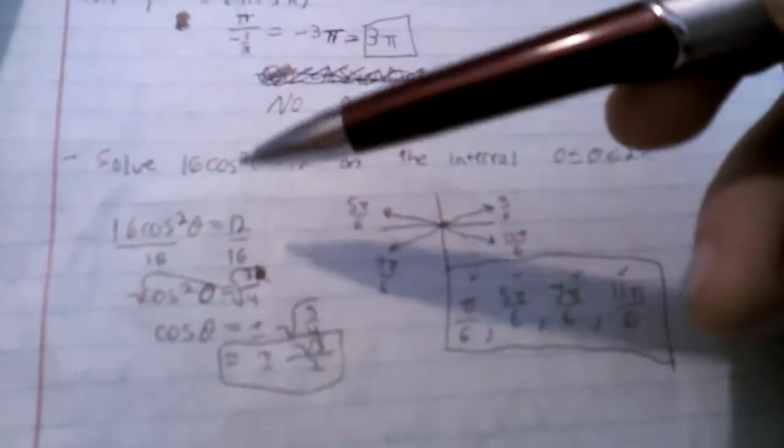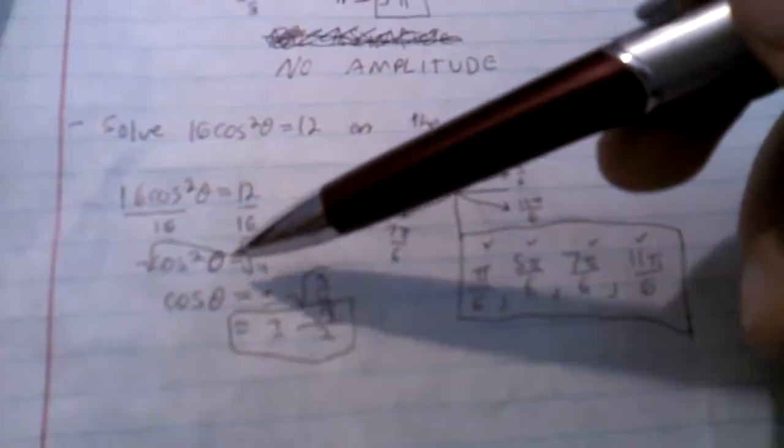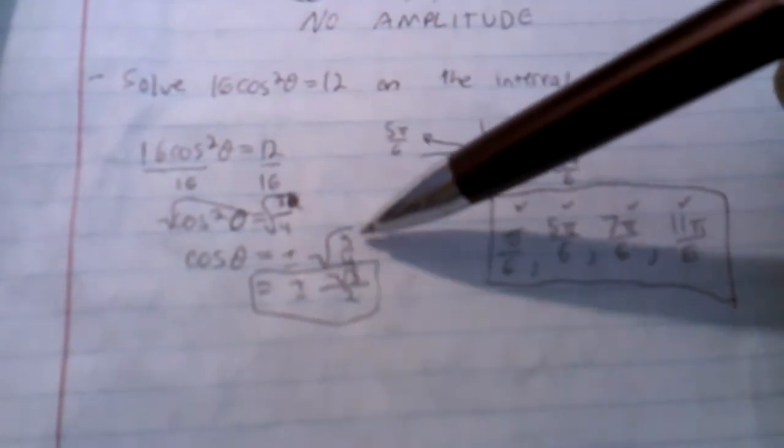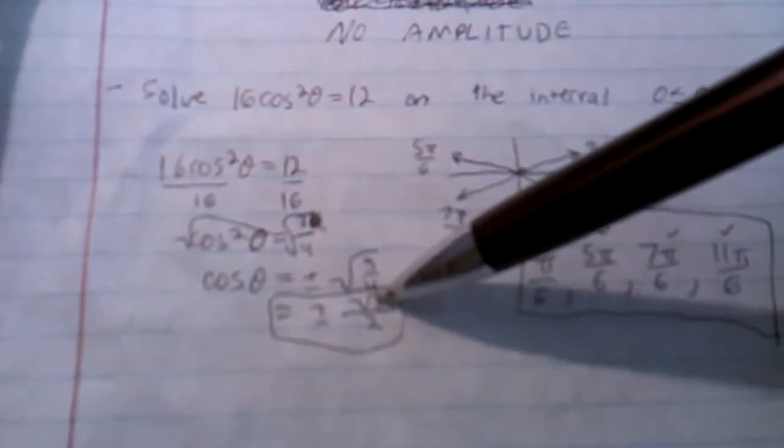We start off by solving for cosine theta. You divide by 16 and then take the square root of that, and it's going to give you the square root of 3 over 4, which is plus or minus the square root of 3 over 2.